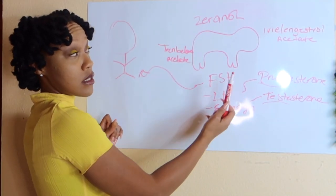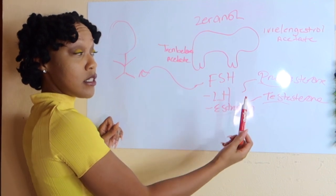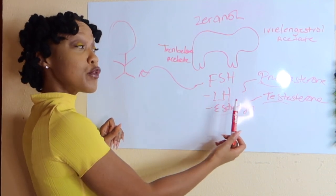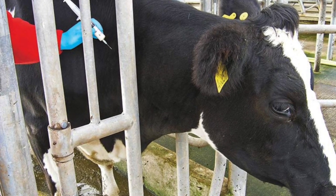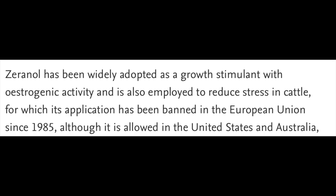So now, not only does the animal contain hormones that's been naturally produced, but now they've also been injected with hormones. According to ScienceDirect, Zeranol has been widely adopted as a growth stimulant with estrogenic activity and is also employed to reduce stress in cattle, for which its application has been banned in the European Union since 1985,